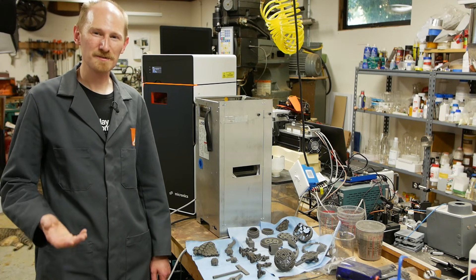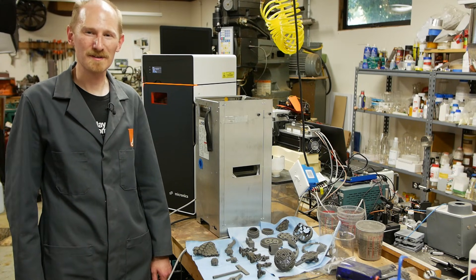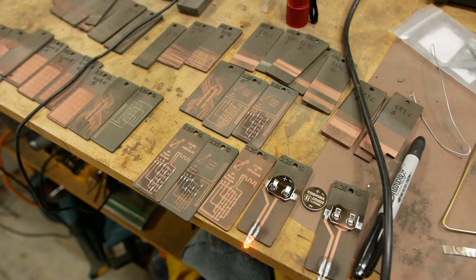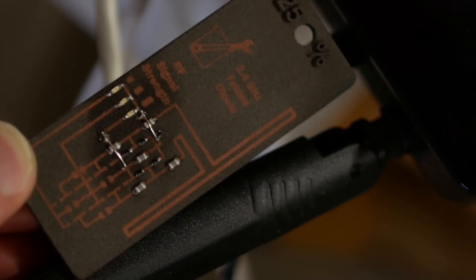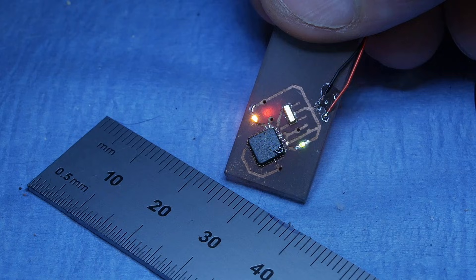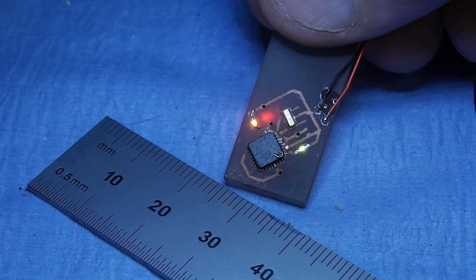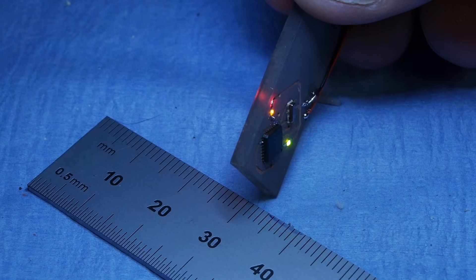Today on Applied Science, I'd like to show you how to make electronic printed circuits on 3D printed parts. Some of you may remember I did a video that sounded just like this years ago, and in that video I was showing how to make copper traces on SLA printed parts. And to be honest, it didn't really work very well.